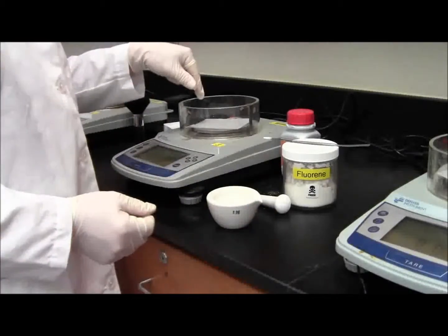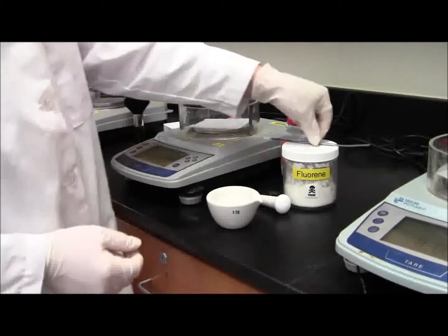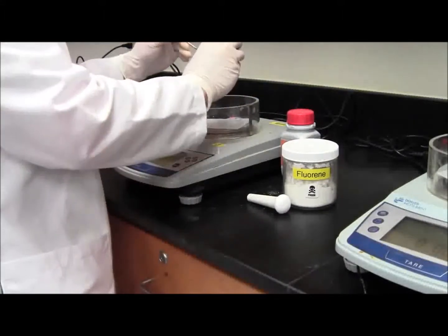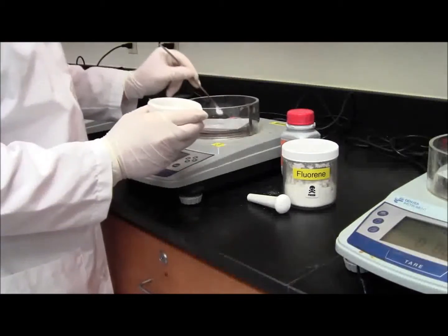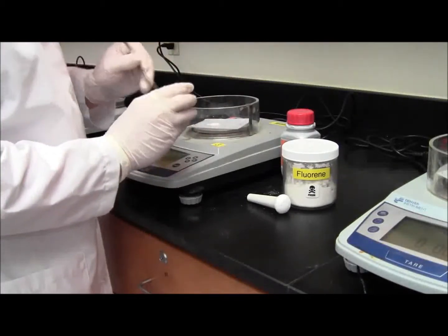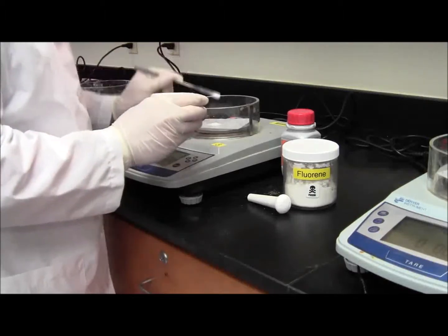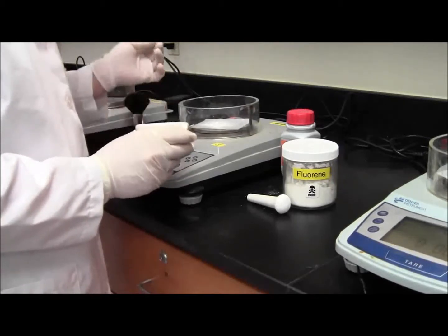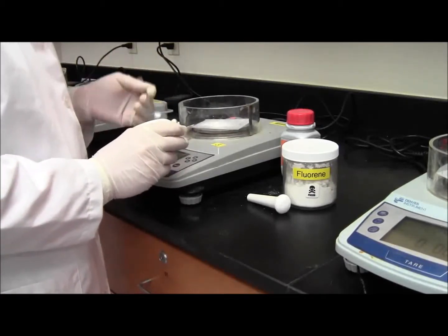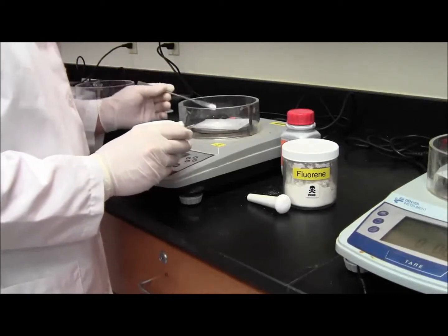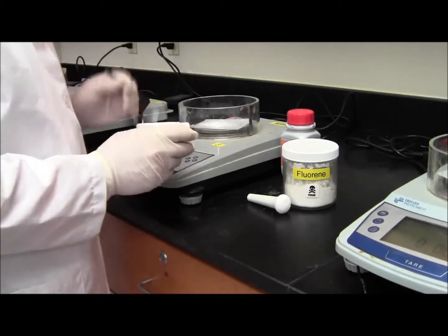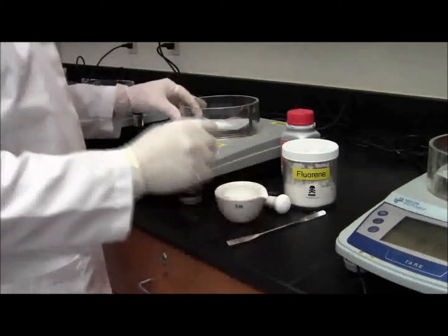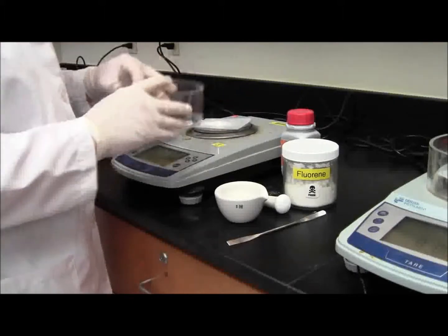Put the weighing paper back on the scale. Tare it again and weigh out 0.95 grams. There I got 0.959. This will be used for the crystallization.